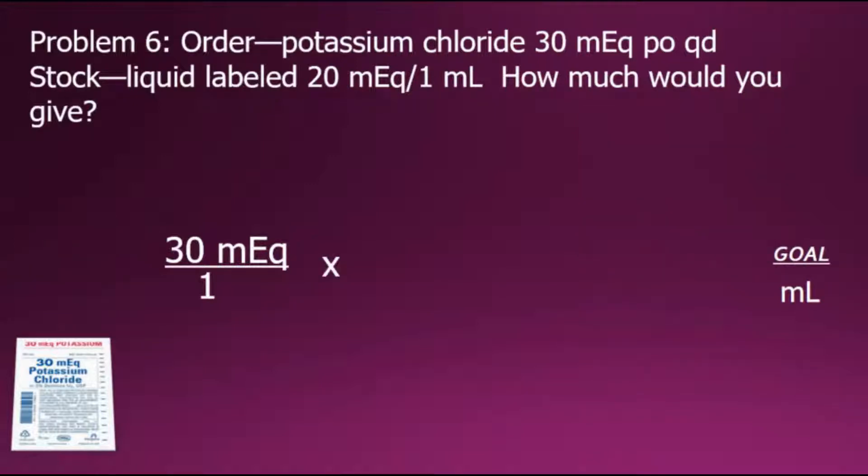Continuing then with our conversion, we need to determine and create a conversion factor fraction so that we can cancel out the milliequivalent. That will require to have that same value in the denominator so that the common factors will cancel out.